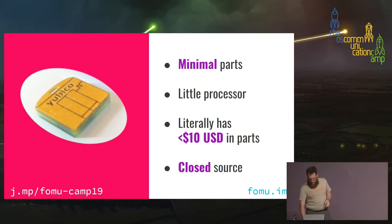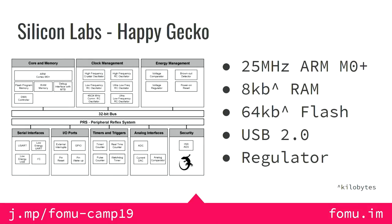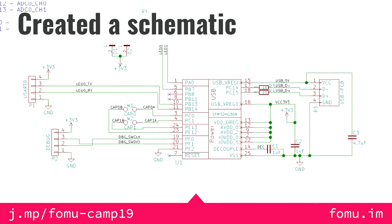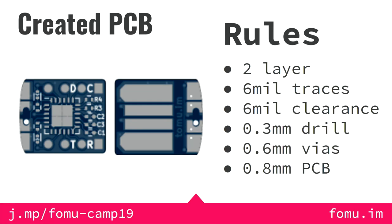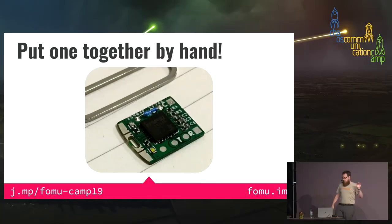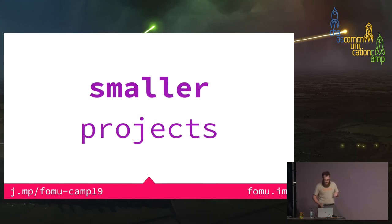Like any hardware geek, I went on DigiKey, sorted ARM MCUs by price, and found this Happy Gecko CPU from Silicon Labs — literally $2.15 USD in individual quantities. Knowing this existed, I created a schematic on a weekend. It was pretty fun because it's such a simple schematic. I created the PCB, put one together by hand, and it worked. It's a 6-mil 6-mil design, so pretty much any fab on the planet can make it.